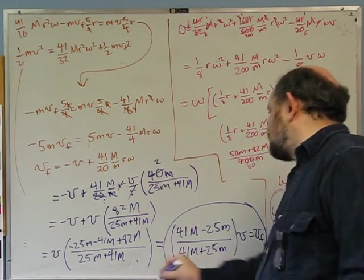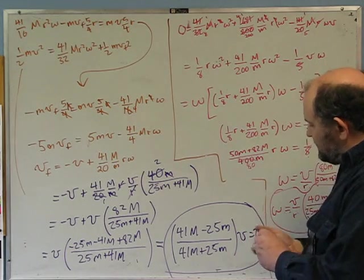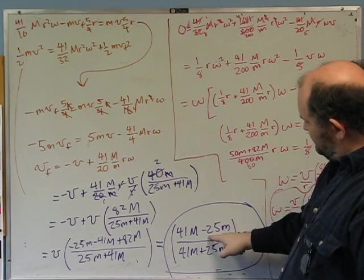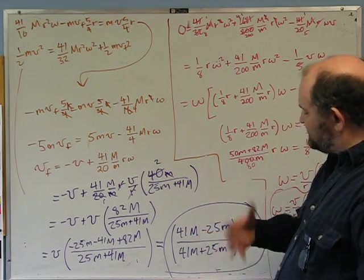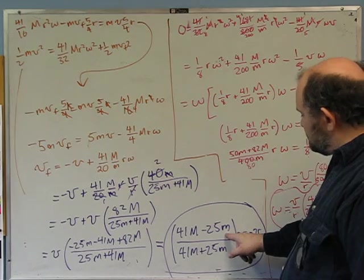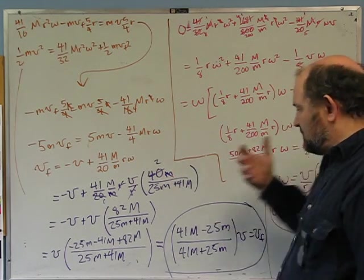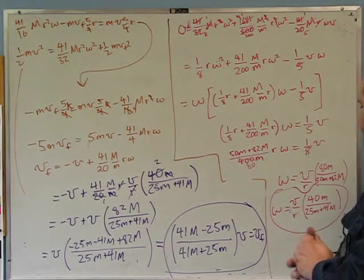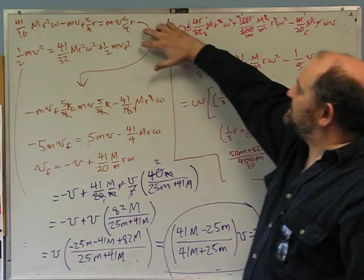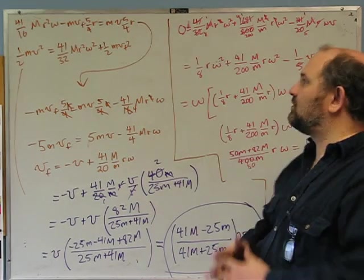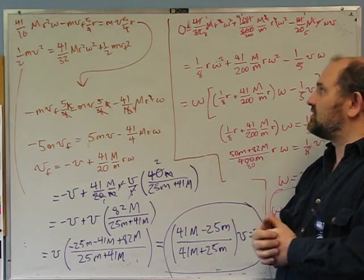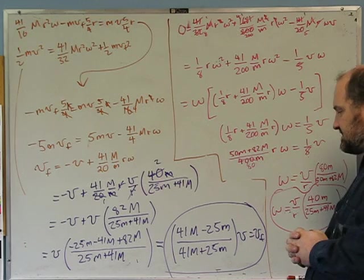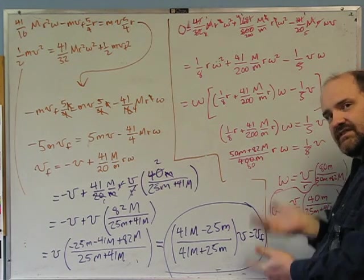If 25m is greater than 41M — meaning the ball's mass is more than about 41/25 ≈ 1.64 times the wheel mass — then vf is negative, meaning the ball continues forward instead of bouncing back. The algebra was a bit ugly, but the key physics is figuring out which quantities are conserved and setting up the equations correctly. That is the third problem, and that concludes this set of conservation laws.